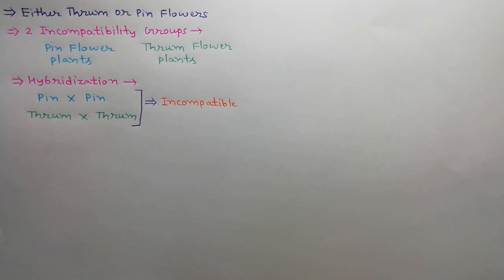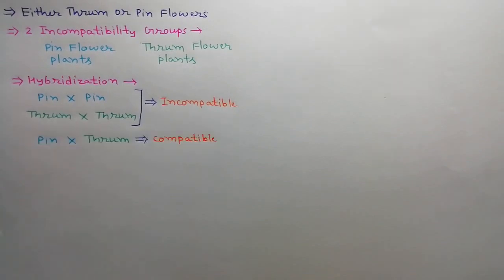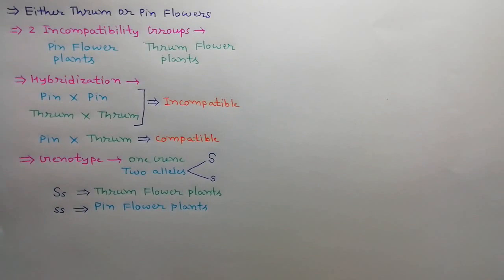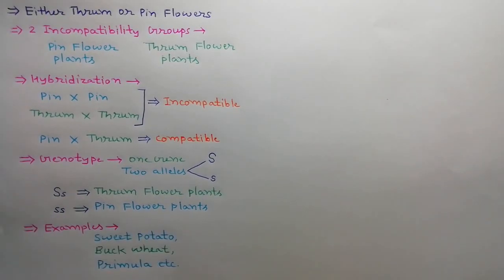Hybridization between two pin flower plants does not produce seeds — they are incompatible. Similarly, hybridization between two thrum flower plants does not produce seeds — also incompatible. Hybridization between pin flower plants and thrum flower plants produces seeds — they are compatible. Distyly is controlled by a single gene with two alleles: capital S and small s. Thrum flower plants have genotype Ss. Distyly is found in crops such as sweet potato, buckwheat, and Primula.